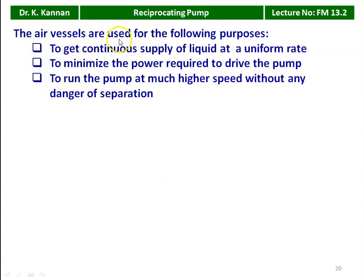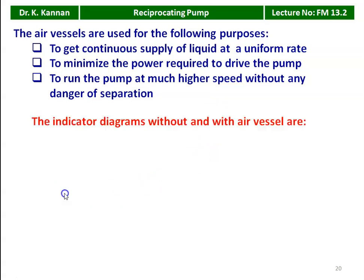Air vessels are used for the following purposes: to get a continuous supply of liquid at a uniform rate; to minimize the power required to drive the pump; and to run the pump at a much higher speed without any danger of water separation. Water separation is a major type of loss in any pump, and it will not happen when you have an air vessel on the suction and delivery side.